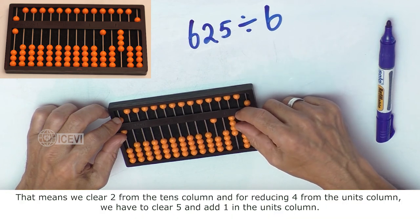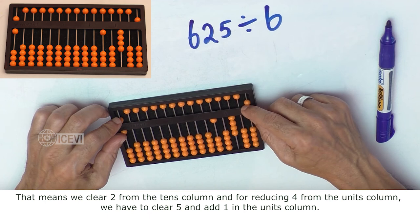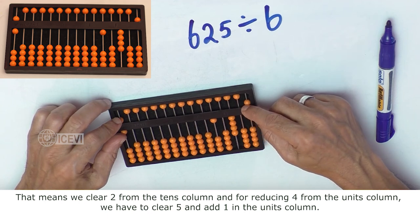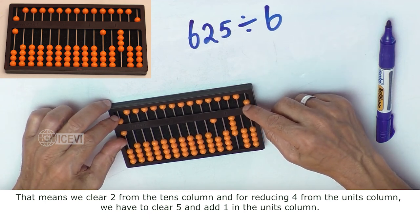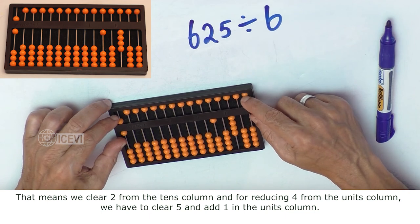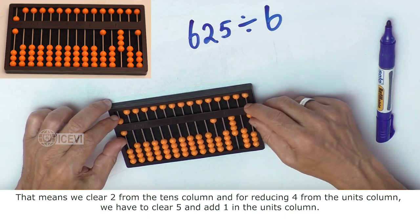That means we clear 2 from the 10s column and for reducing 4 from the units column we have to clear 5 and add 1 in the units column.